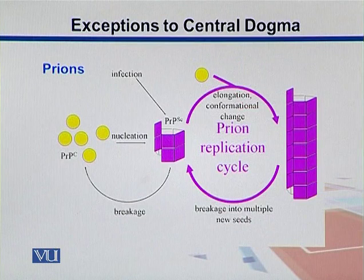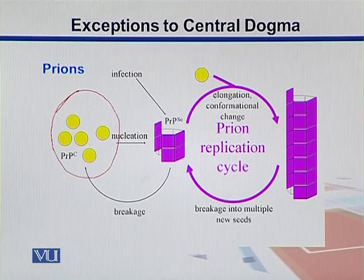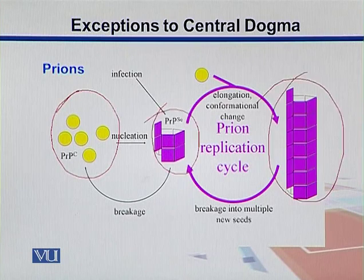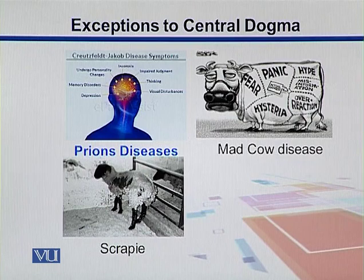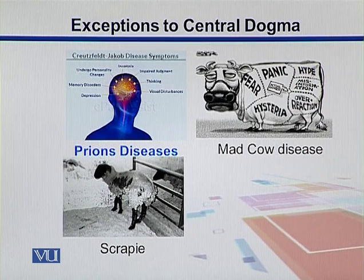Here we see prions. As indicated earlier, prions cause different diseases where different forms of the proteins get interconverted into one another. As we see in this slide, there are different prion diseases. The most common one, from which prions were discovered, was mad cow disease, which mainly destroyed the cattle industry in Europe and caused neurological disorders in animals as well as diseases in humans.